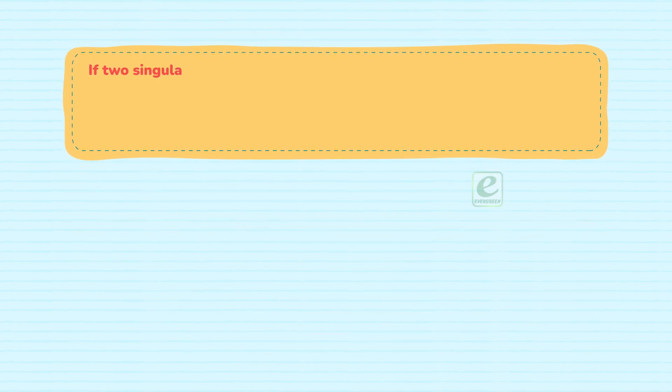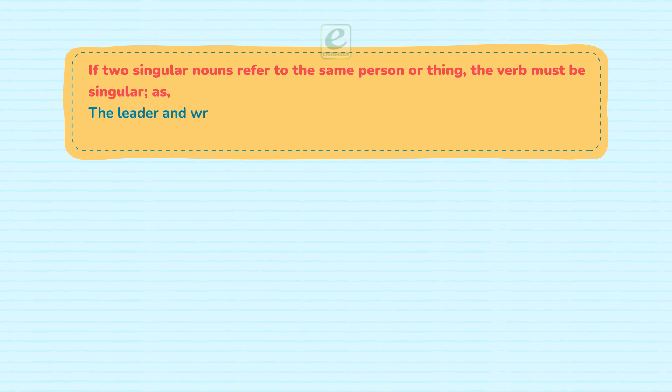If two singular nouns refer to the same person or thing, the verb must be singular. For example: The leader and writer is dead. My friend and guide has come.